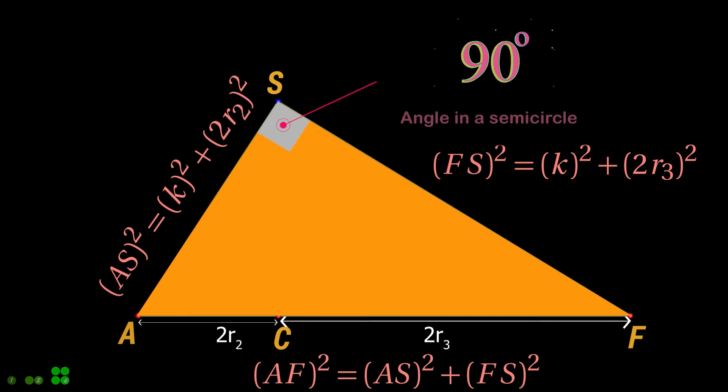Note that angle S is 90 degrees because the angle at the circumference in a semicircle is a right angle.